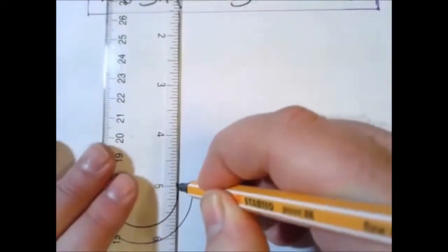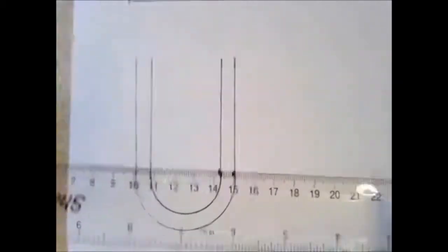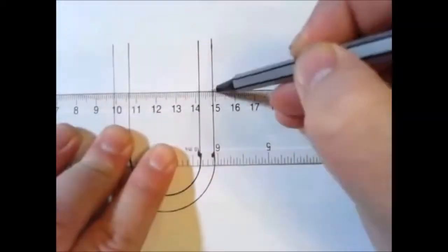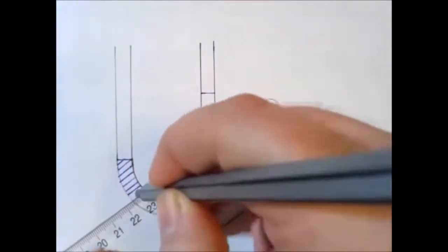And how much it displaces that water tells you something about its density or the pressure that it's given, which is a product of its density. So here we have a U-shaped tube with some displaced water. The water is represented by the blue section.